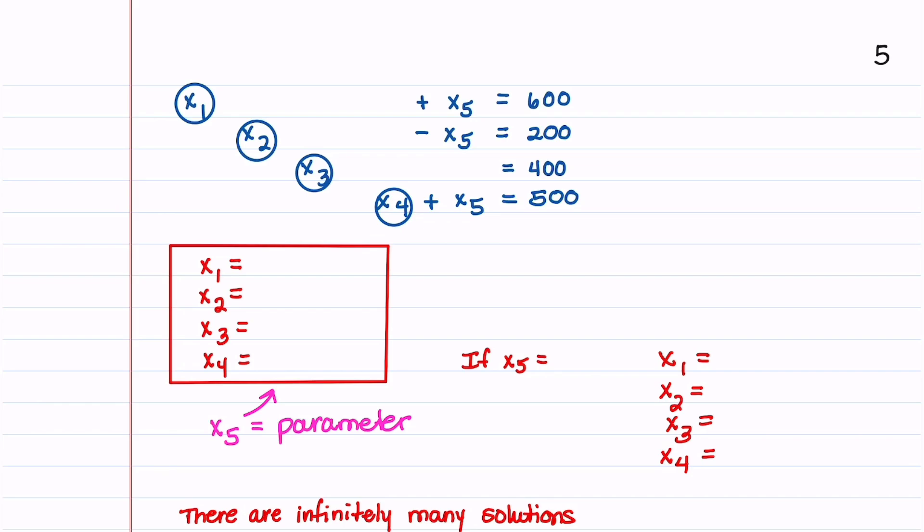Since we have five variables and four equations, one of our variables is going to be what we call a parameter. We'll set that variable to be x5. And the solution for x1, x2, x3, and x4 will have x5 in it.